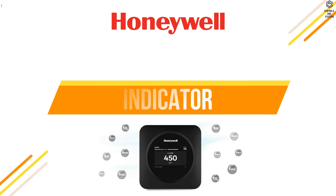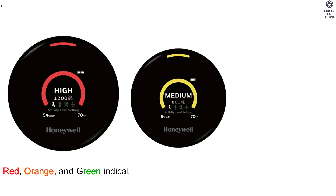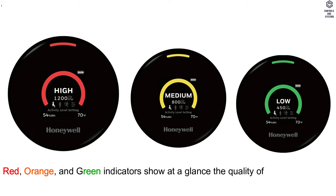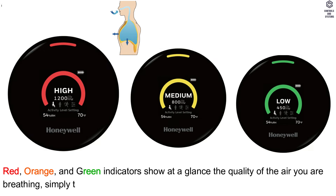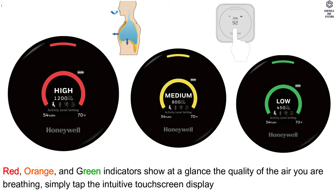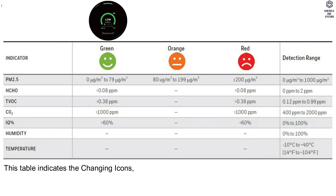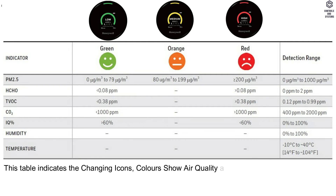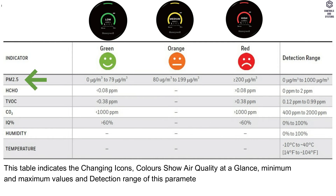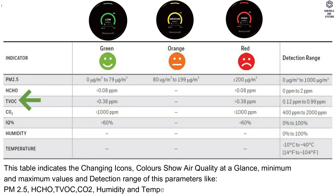Indicator: red, orange, and green indicators show at a glance the quality of the air you are breathing. Simply tap the intuitive touchscreen display for additional details. This table indicates the changing icons and colors that show air quality at a glance, including minimum and maximum values and detection ranges for parameters: PM2.5, HCHO, TVOC, CO2, humidity, and temperature.